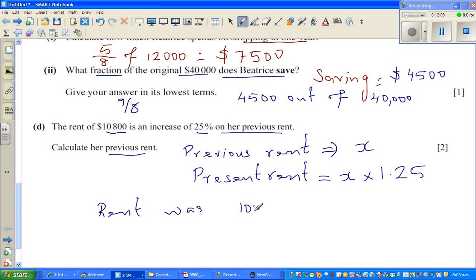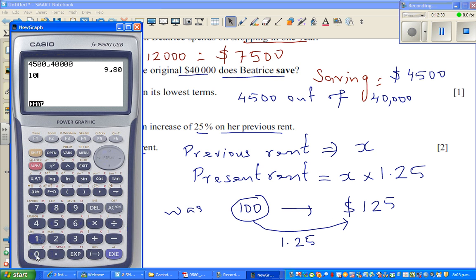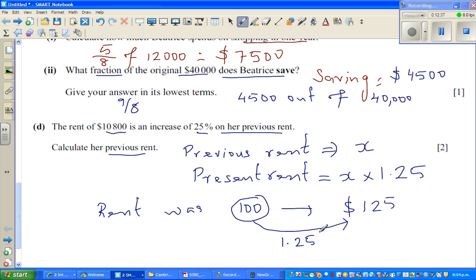Suppose the rent was say 100. Now if rent was 100, and if there's an increase of 25%, you can understand this is $125 is the current rent. So from this, if you want to get this, this is same as 100 times 1.25. So I'll show this on the calculator. 100 times 1.25 is 125. So this is called a factor. So if it was X, it became 1.25X.